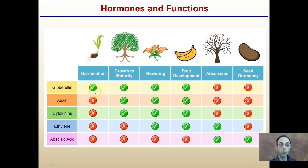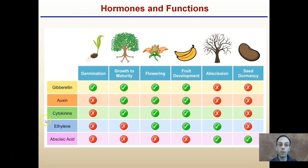Notice that for germination, only gibberellins are really the most active, whereas when we look at flowering and fruit development, pretty much everything but abscisic acid is involved in some way. Abscisic acid is key for seed dormancy, and ethylene also plays a role in abscission. So you can see that just one hormone isn't doing just one task — it can be involved in multiple different tasks. We're going to learn about each of these in more detail so you can appreciate the specifics of how different hormones and their ratios and concentrations can impact plant growth.